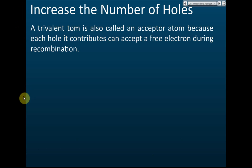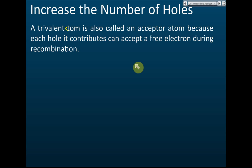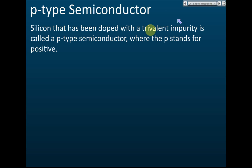A trivalent atom is also called an acceptor because it can receive electrons — each hole can accept a free electron during recombination. Recombination is when an electron jumps into a hole and the hole disappears. When silicon is doped with a trivalent impurity, it is called a P-type semiconductor because it contains a lot of holes, and holes carry positive charge. So P stands for positive.